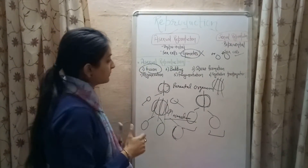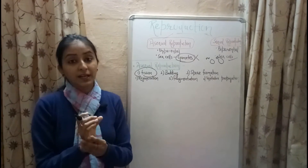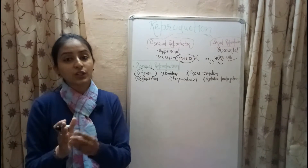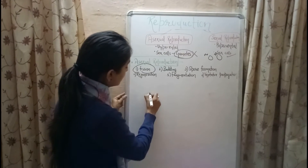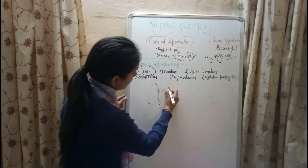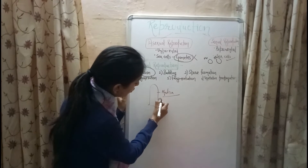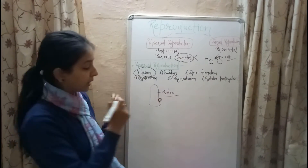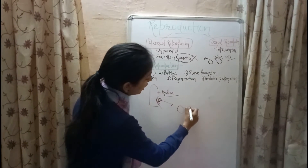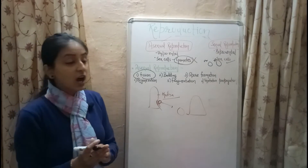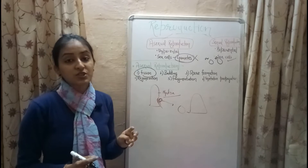The next method is budding. In budding, a small part of the body of the parental organism grows out as a bud, and then this bud detaches from the body of the parental organism and forms a new individual. Budding takes place in the multicellular organism called hydra. A small part from the body of the parental hydra grows out as a bud, detaches from the main body, and forms a new hydra organism. Budding also occurs in the fungus yeast.